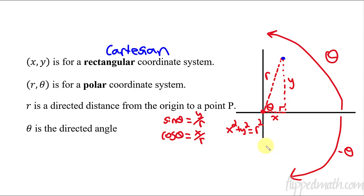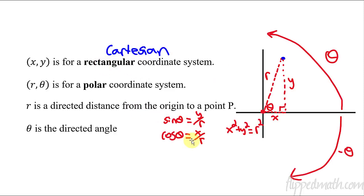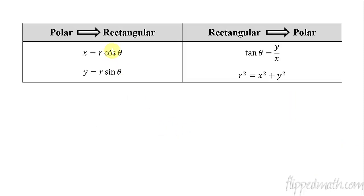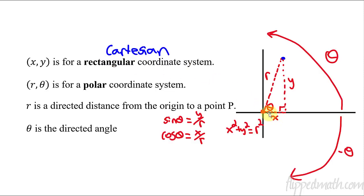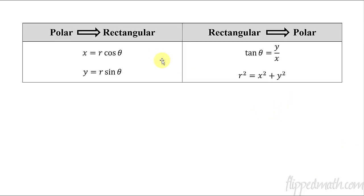These formulas allow us to convert between the two systems. If we have polar form and want rectangular form, we plug r and θ into x = r·cos θ and y = r·sin θ. Going the other direction, if you only have x and y and want the angle, you set up the fraction y/x and take the inverse tangent of both sides to get θ.